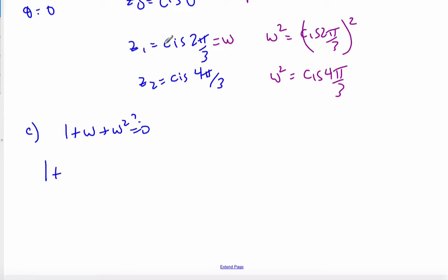1, w is cis 2π by 3, which is cosine 2π by 3 plus i sine 2π by 3. That's w plus cosine 4π by 3 plus i sine 4π by 3 because w squared, I would show it as this.